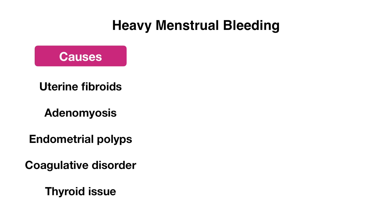Causes of heavy menstrual bleeding include structural causes such as uterine fibroids, which are benign tumors found within the uterus; adenomyosis, where endometrial tissue grows within the muscular wall of the uterus; and endometrial polyps. Non-structural causes include coagulative disorders that predispose a patient to bleeding, as well as thyroid issues, which tend to be a cause of many different types of abnormal uterine bleeding.